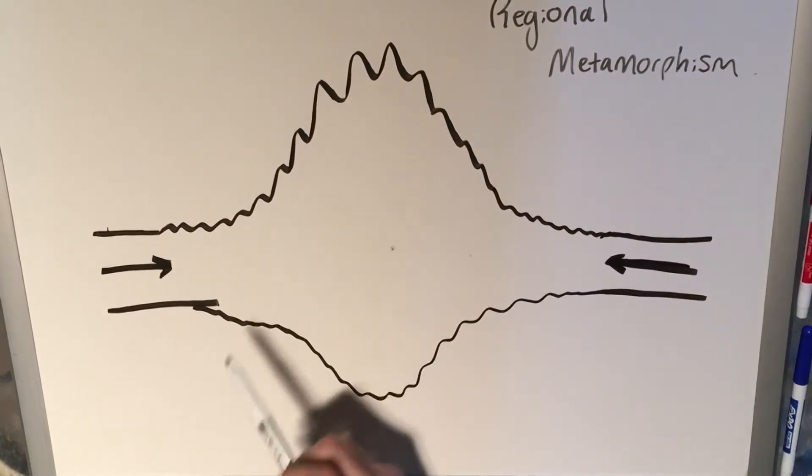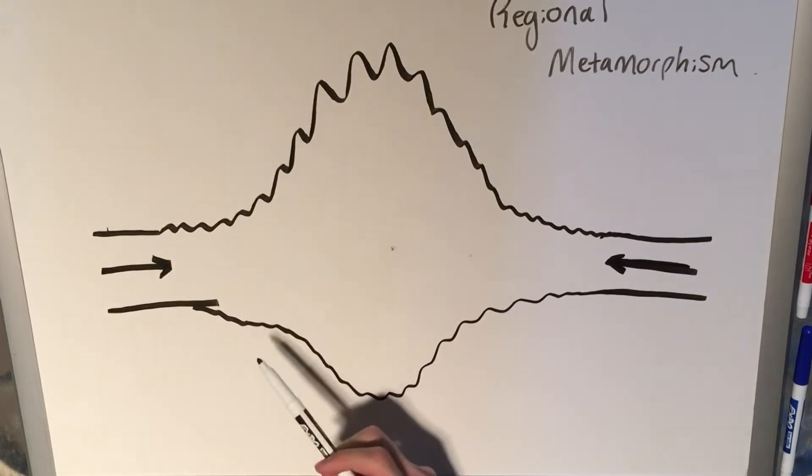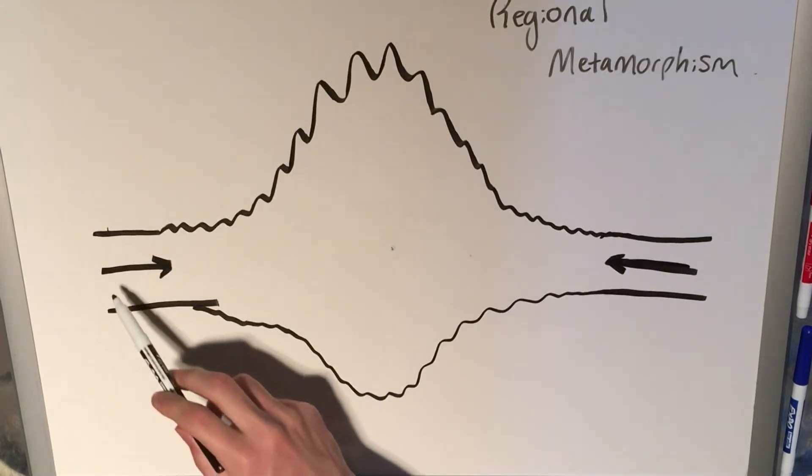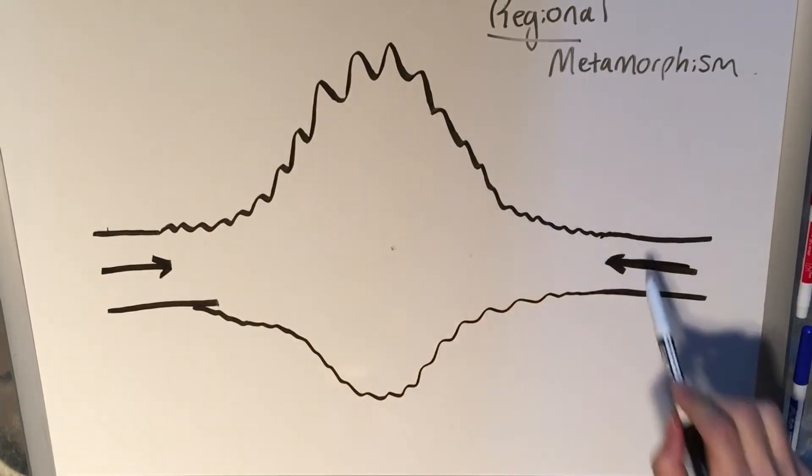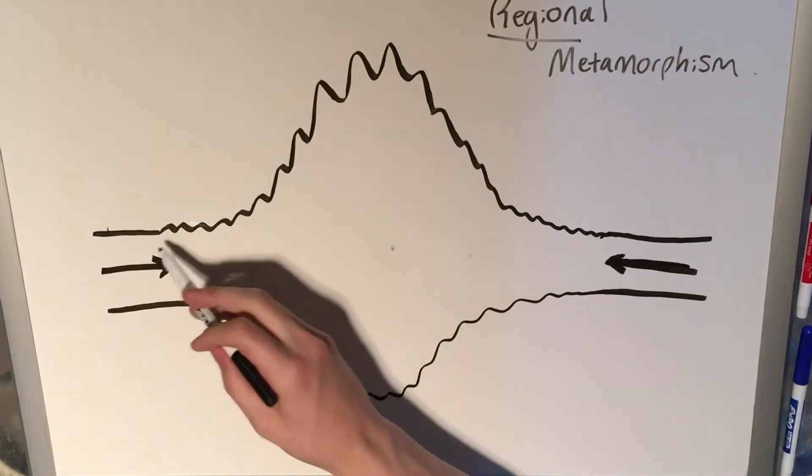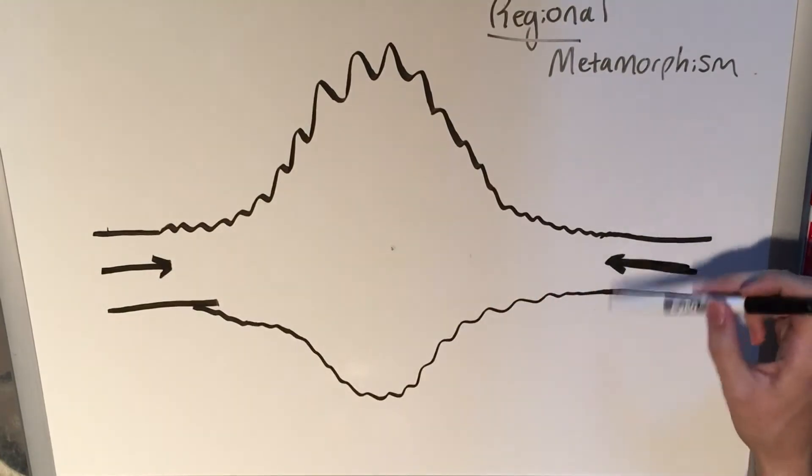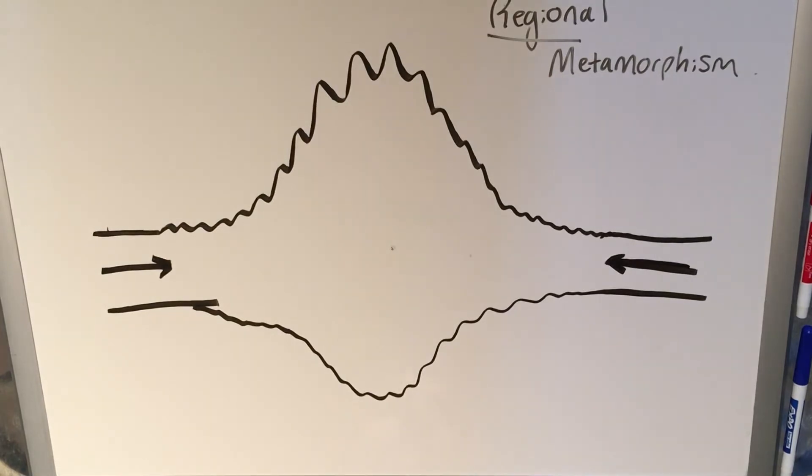And you can remember that it's different from contact or thermal metamorphism, because you can see that it's a whole region—regional. It's an entire mountain range region. Everywhere where there's deformation in the crust, up to these margins around here, we're going to see some degree of metamorphism.